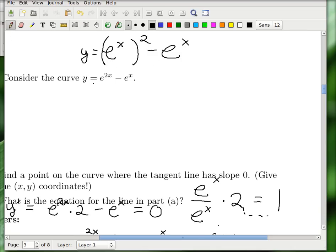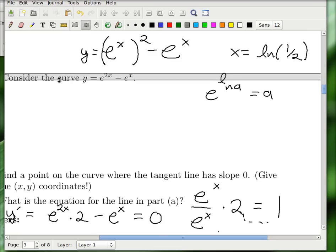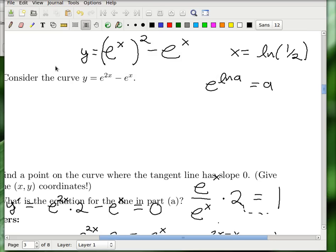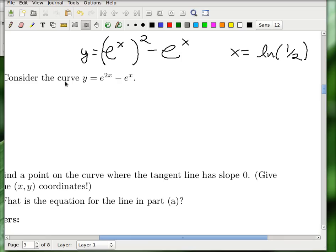So this is just the original function, and I want to plug in x equals natural log of 1 half. So I'll just do that in each place, and each place where I do it, the e and the natural log are just going to cancel each other, that's because e to the natural log of anything is just that thing, and that's because those two functions are inverses.